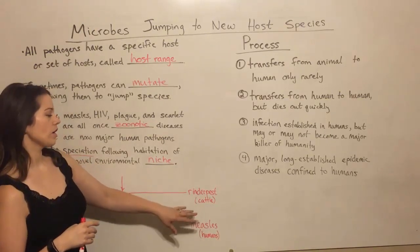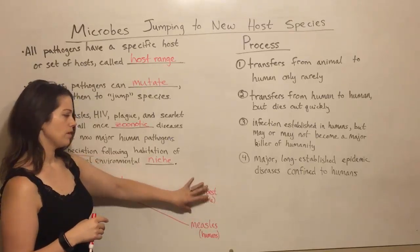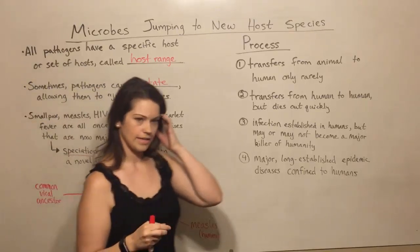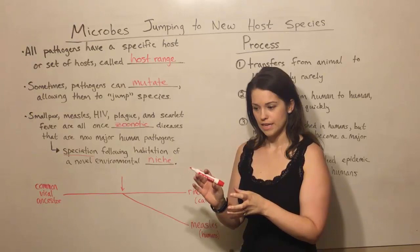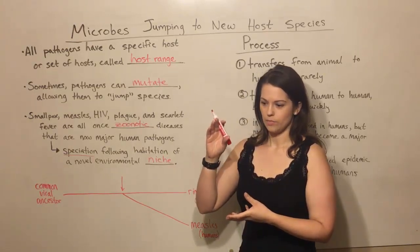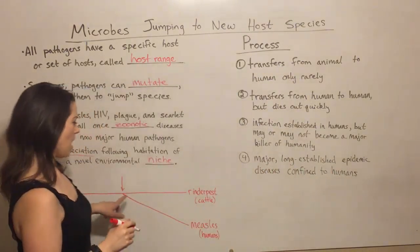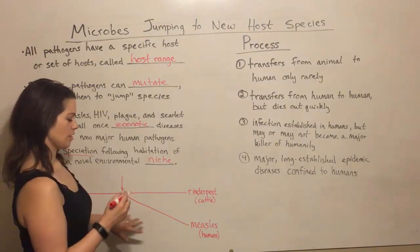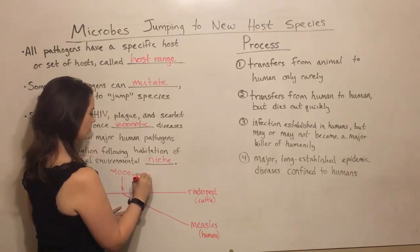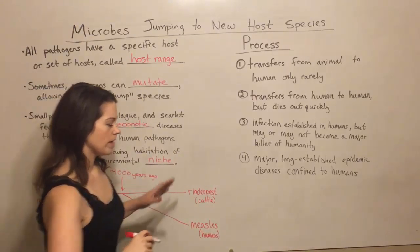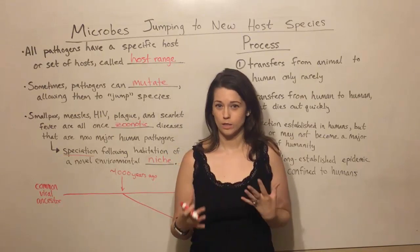By comparing the genetic material of modern-day viruses — rinderpest has actually been eradicated now, but of the last known rinderpest viruses with modern measles viruses — scientists can look at how many differences there are between those two viruses, look at the estimated mutation rate, and actually estimate about when this jump into the human species occurred. Using molecular clock techniques, it was roughly a thousand years ago.